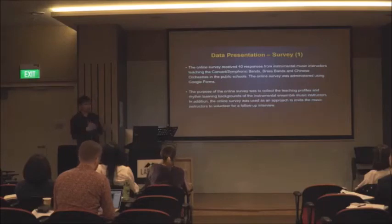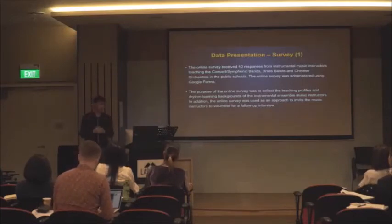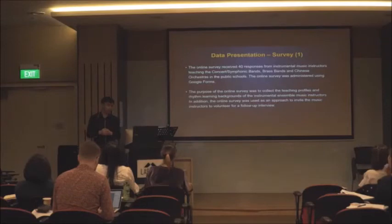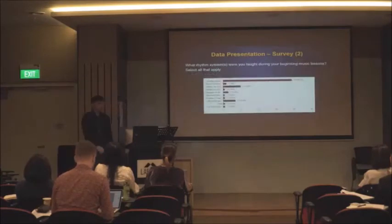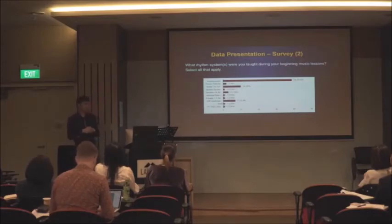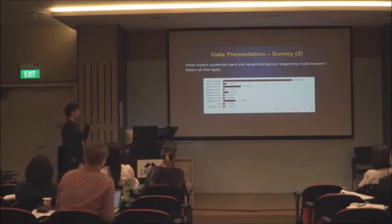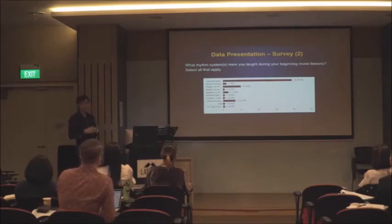Moving on to the data presentation: the online survey received 40 responses from instrumental music educators. The main purpose was to collect teaching profiles and rhythm learning backgrounds, and to invite educators to volunteer for follow-up interviews. A key finding: when asked what rhythm system they were taught during their beginning music lessons, 97.5% were taught the number system. One educator was not taught any rhythm system, and one was taught an improvised system created by their teacher.